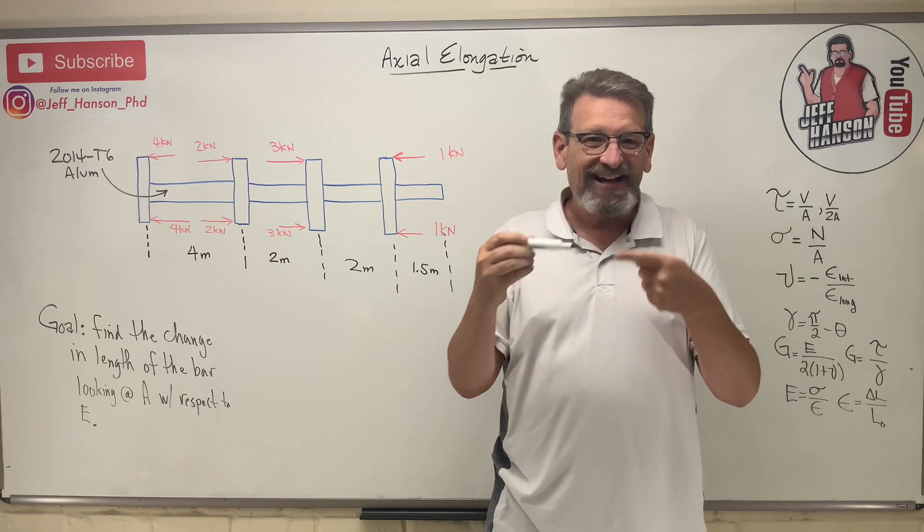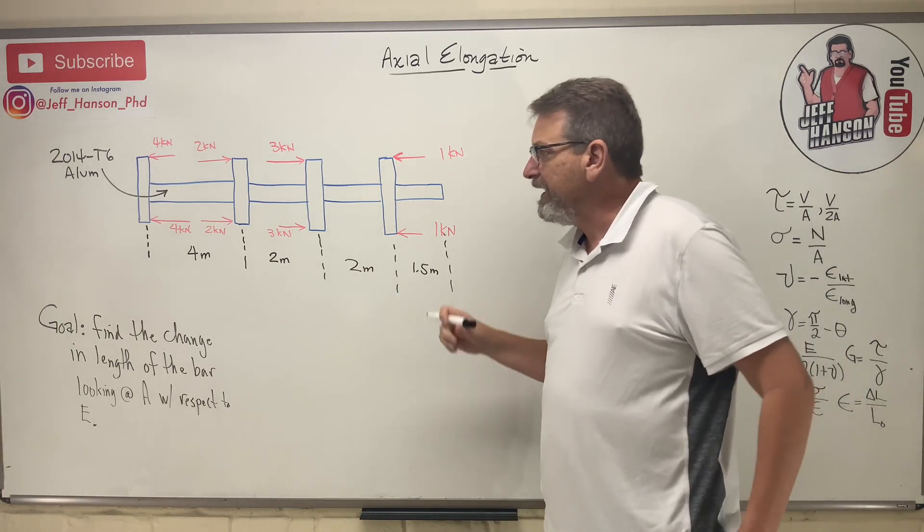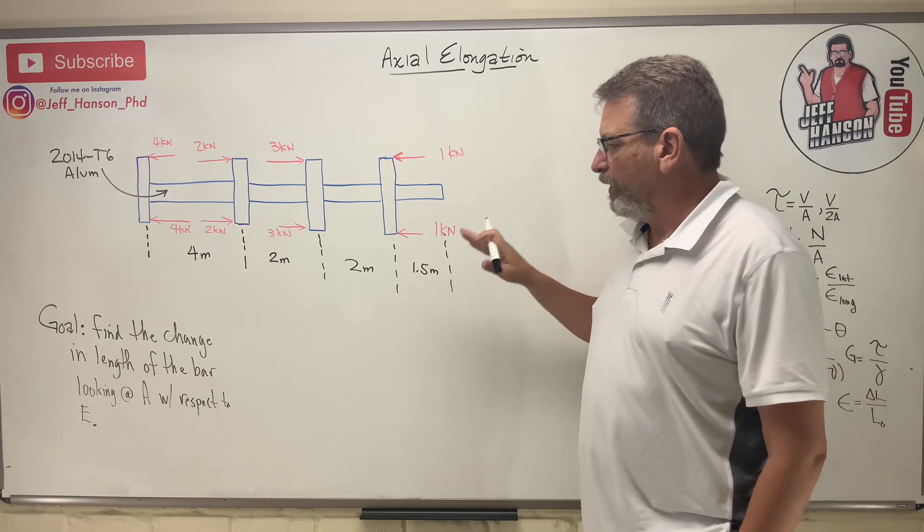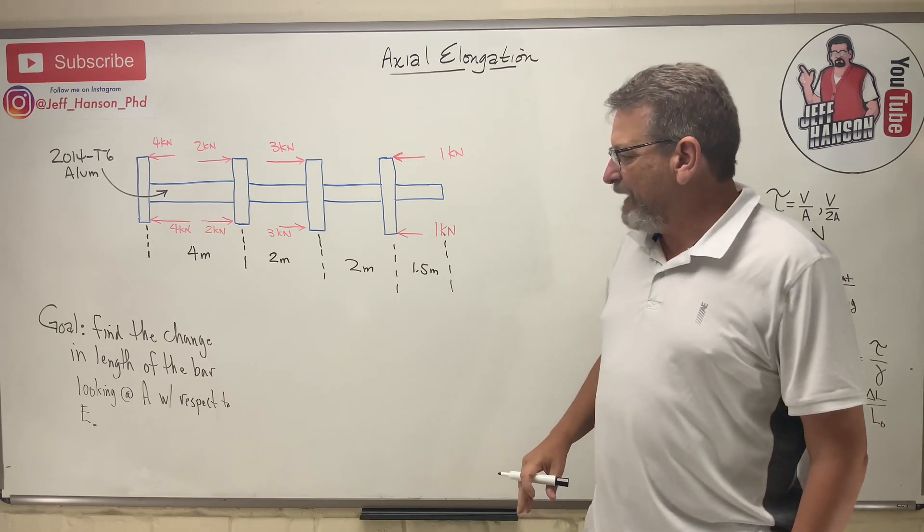It's getting shorter or longer along its axis - that's what we mean by axial elongation. I've got an example problem here and they want to find the change in length of this bar from A with respect to E.